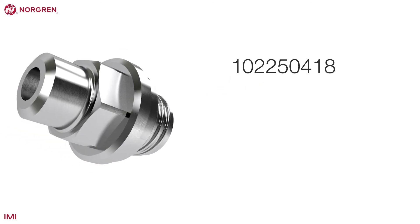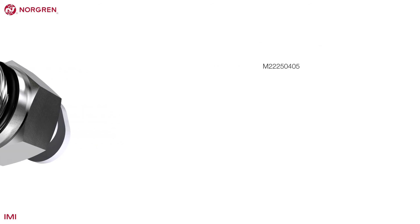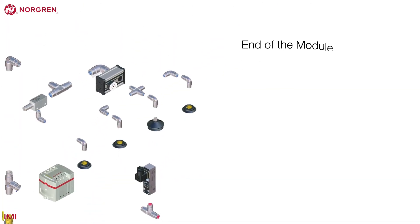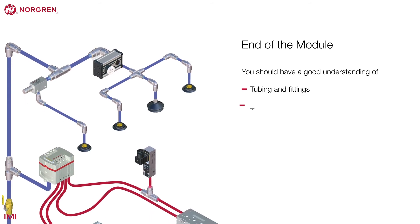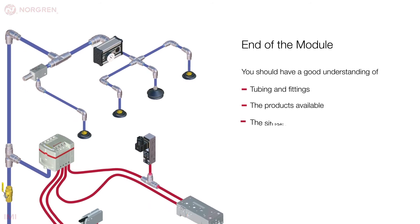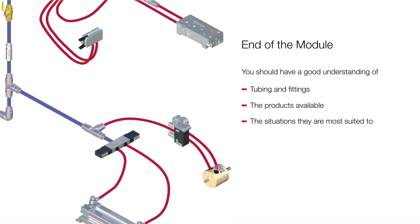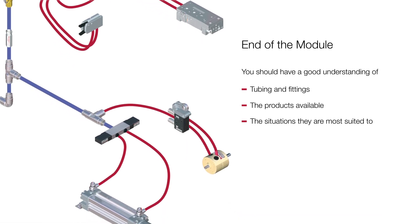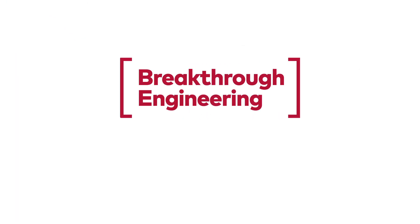Swapping between parts is just changing the range at the front. An American example might look like this. That's the end of the module. You should now have a good understanding of the tubing and fittings, the products available and the situations they are most suited to. There are other related products available from Norgren not covered in this course — please visit the website to find out more.